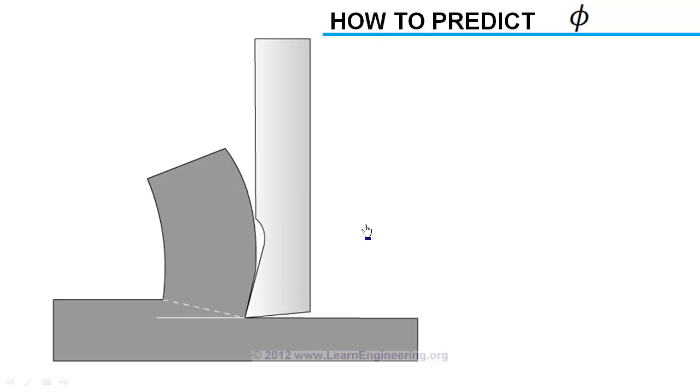One way to predict the shear angle is to assume the shear plane adjusts itself to reduce energy required for the cutting operation. Or, shearing will take place in a plane where there is maximum shear stress, so that force and work required for cutting is minimum.